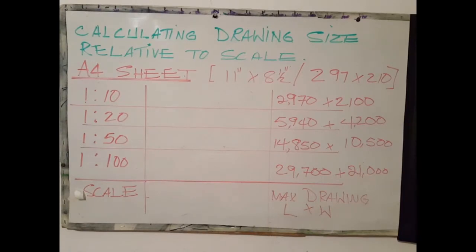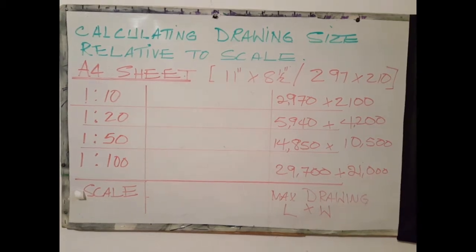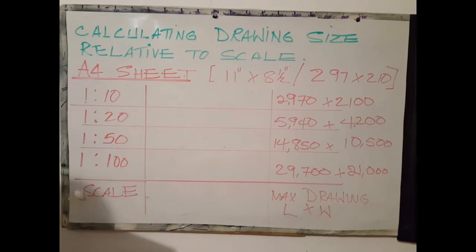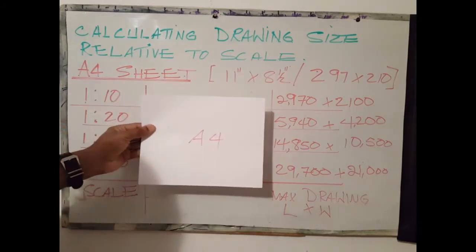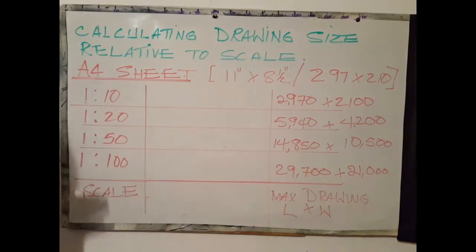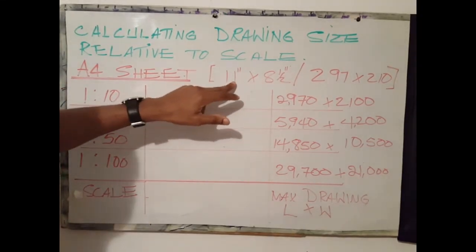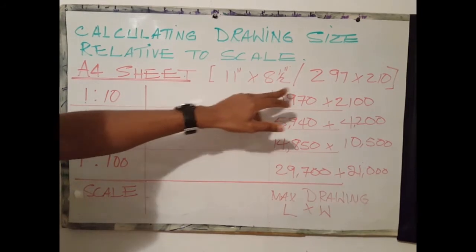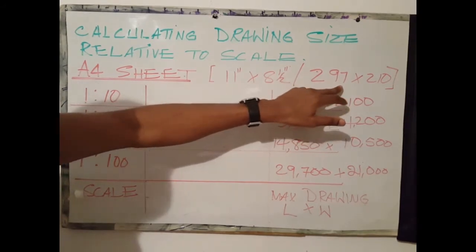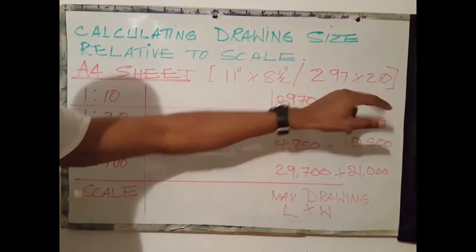As mentioned earlier, there are three factors to be considered when working out paper size: drawing size and intended scale. This is a typical A4 sheet of paper. Here we have a breakdown of an A4 sheet of paper which is 11 inches by 8 and a half inches or 297 millimeters by 210 millimeters.